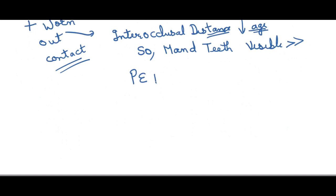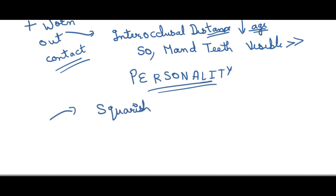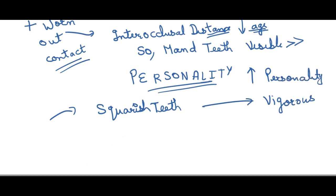The third SPA factor is personality. The dentist should select and arrange teeth to improve the patient's personality. Individuals who exude vigor benefit from squarish and larger teeth to complement their vigorous personality. For executive or professional individuals, aligning front teeth in a straight line creates a more leveled appearance that imparts seriousness or professionalism. Smaller, symmetrically placed teeth can contribute to a refined and balanced appearance suitable for professional roles.